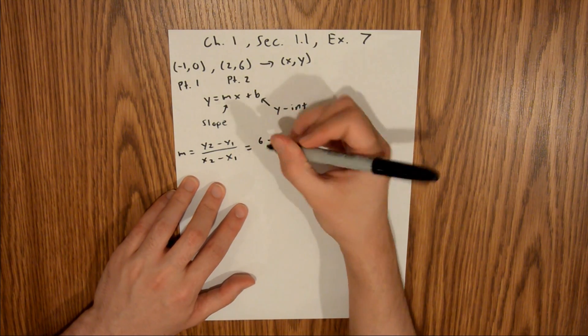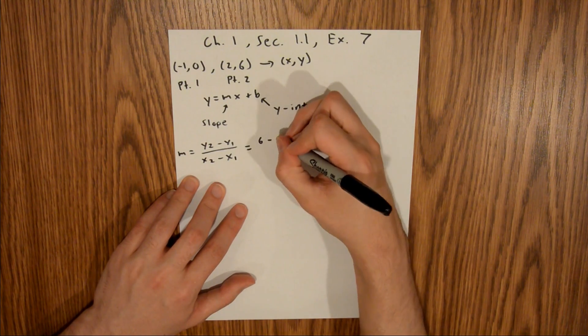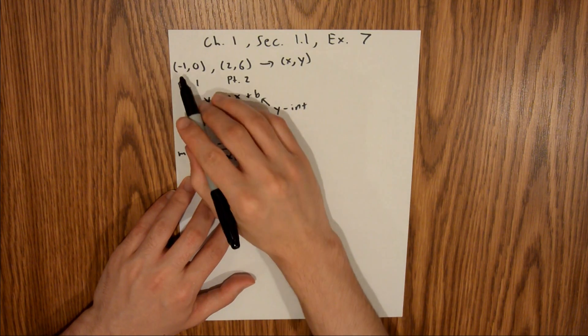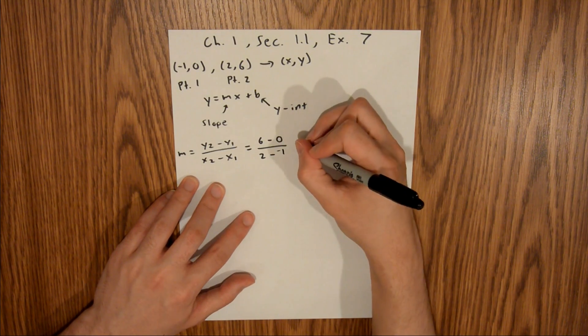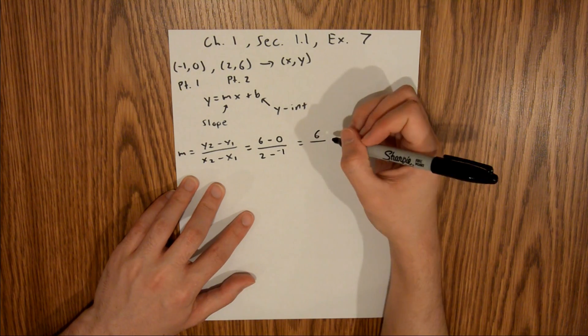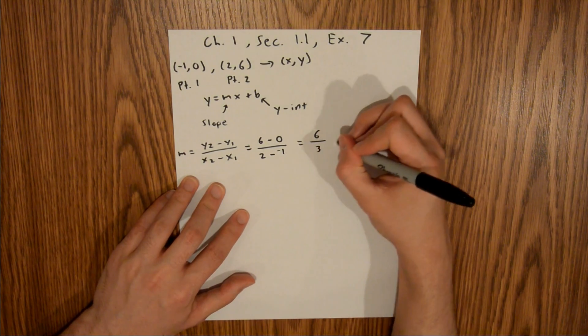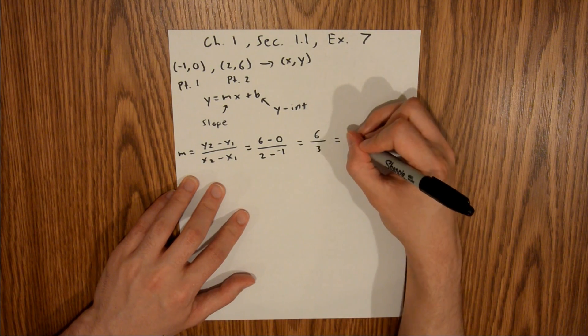over x2, which is 2, minus x1, which is -1. This equals 6. In the denominator, we have a double negative, so this is really 2 + 1, which equals 3. And 6 divided by 3 equals 2. Now we can take that slope and plug it into our generic equation. That gives us y = 2x + b.